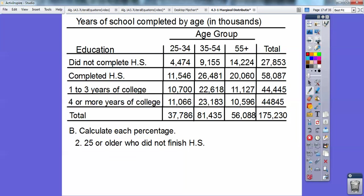Alright, so number two, people 25 or older, again, way over to that right-hand column, who did not finish high school. So did not finish high school is at 27,853,000. Again, divided by the total down at the bottom is 15.9%. Okay, and then we're going to do this for the 25 or older who completed high school, and you get a little over 33%.